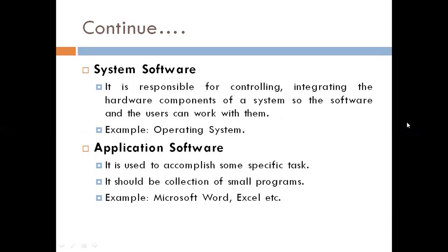System software is responsible for controlling and integrating the hardware components of a system so that the software and users can work with them. The best example is the operating system. Application software is used to accomplish some specific task — it is a collection of small programs, for example Microsoft Word, Excel, PowerPoint, etc.